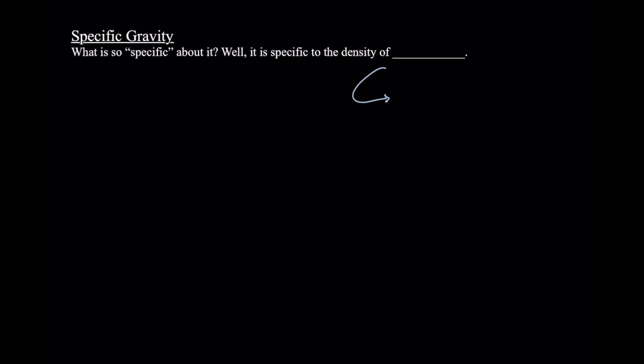Let's jump right into it. Ultimately, specific gravity is a measurement of density—specifically, it is a measurement of relative density. It actually doesn't have any units when we write out a specific gravity. So I want to pose the question: what exactly is so specific about it?